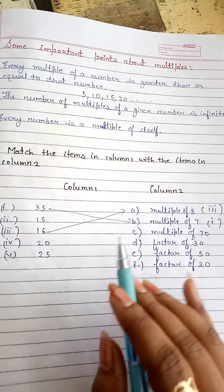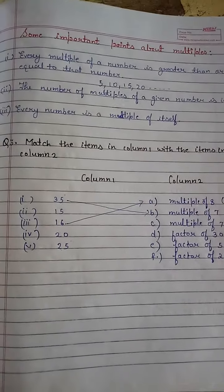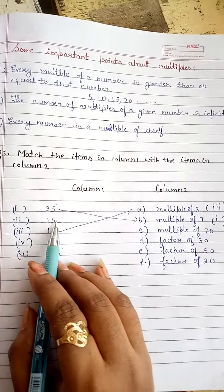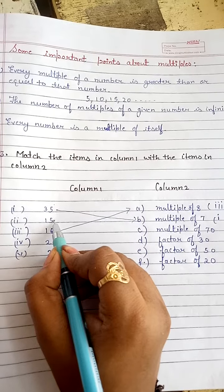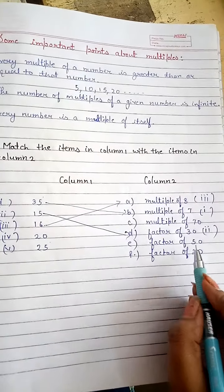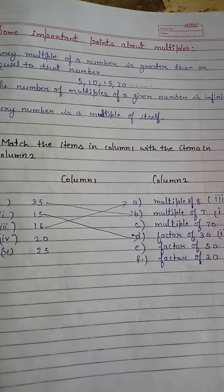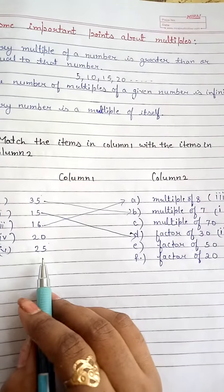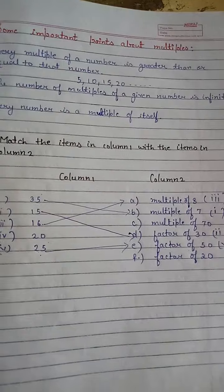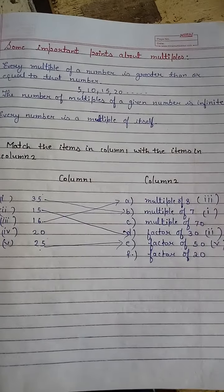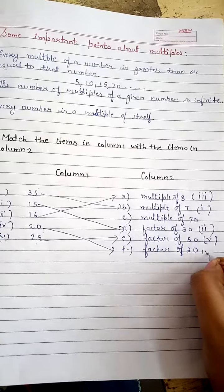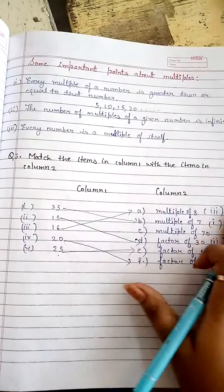Next is 'factor of thirty.' We need a number by which thirty can be exactly divided. Fifteen twos are thirty, so we match it with option D — option two. Then 'factor of fifty': twenty-five twos are fifty, so that is the correct match. Finally, 'factor of twenty': every number is a factor of itself, and twenty is given, so twenty is the answer — option four.